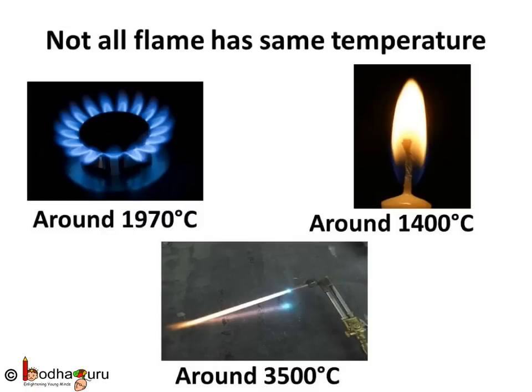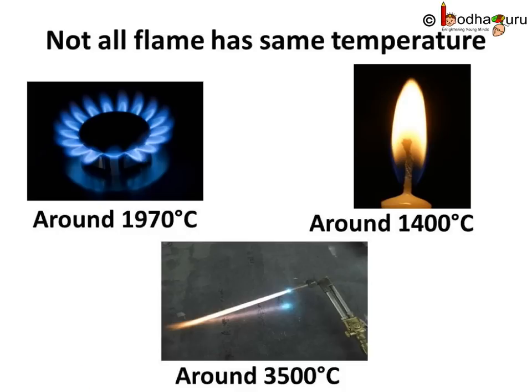The temperature of the flame varies with the fuel type also. Butane gas, which we use for cooking, burns at 1970 degrees Celsius. The temperature of the oxyacetylene flame, which is used for welding, is about 3500 degrees Celsius. So the temperature depends on the fuel type.